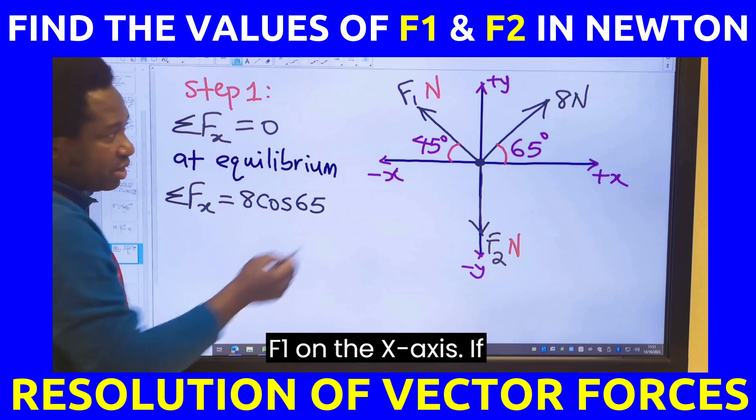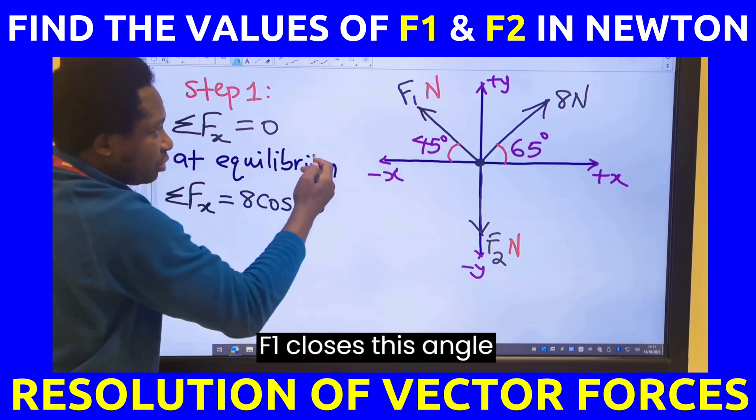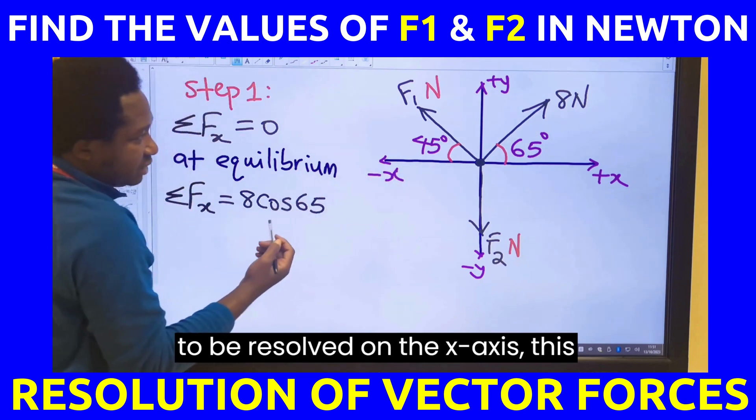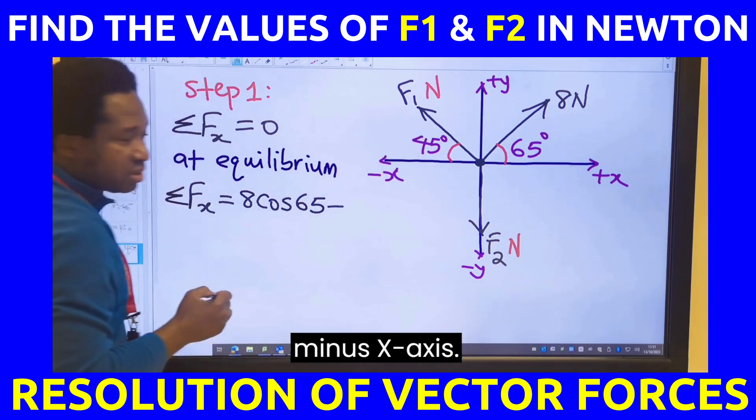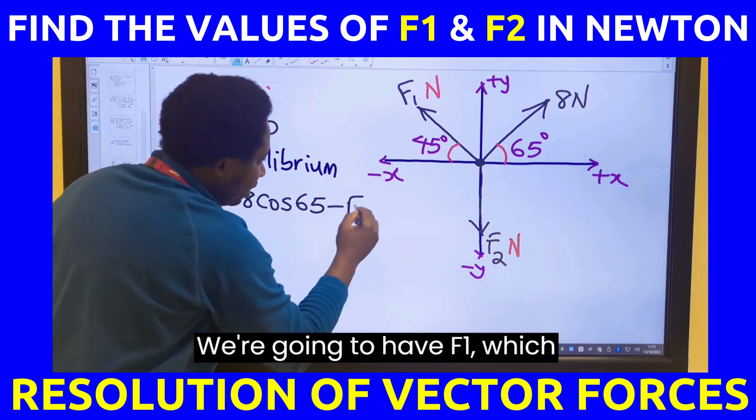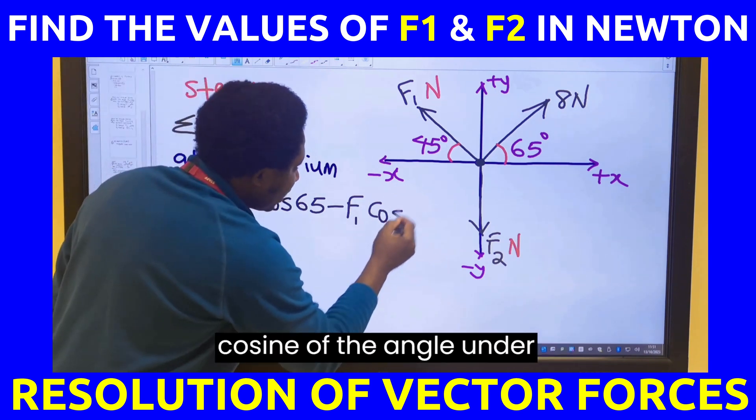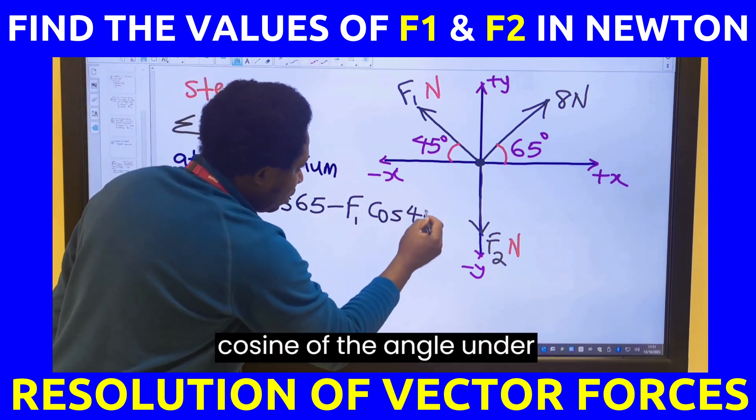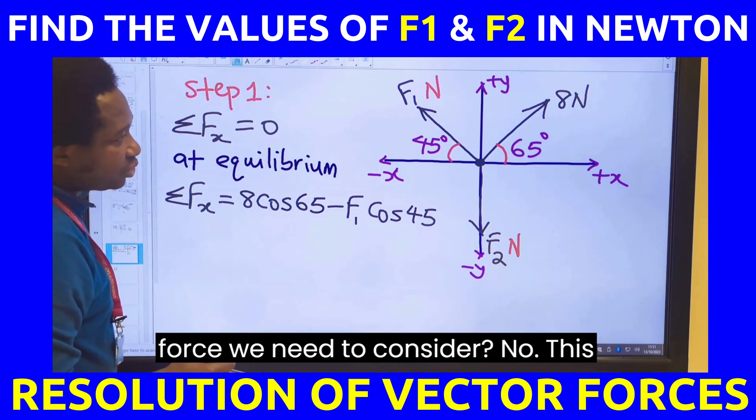Next, we consider F1 on the x-axis. If F1 closes this angle to be resolved on the x-axis, this arrow is pointing towards the minus x-axis. We're going to have F1, which is the force, multiplied by cosine of the angle under consideration.